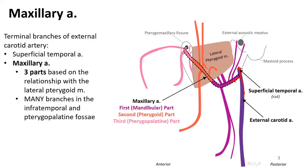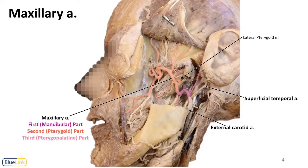So we're going to break it down into three parts, and we break it down by the lateral pterygoid muscle. You can see that the lateral pterygoid muscle will divide it into a first part, a second part, and a third part. We're going to focus mostly on the second part, called the pterygoid part, because that's where the branches to the muscles of mastication will come from. Let's take a look in a donor.